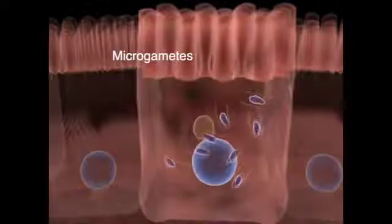Fertilization occurs when the microgamete fuses with a female macrogamete. Each macrogamete is differentiated from a single merozoite.